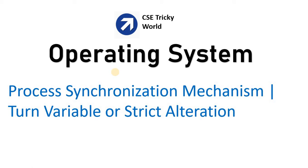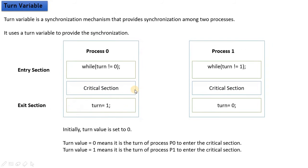Operating system process synchronization mechanisms — turn variable, or strict alteration. The turn variable is a type of synchronization mechanism which applies to two processes.